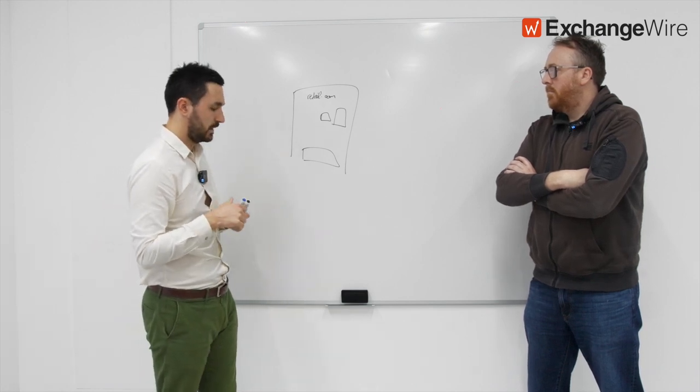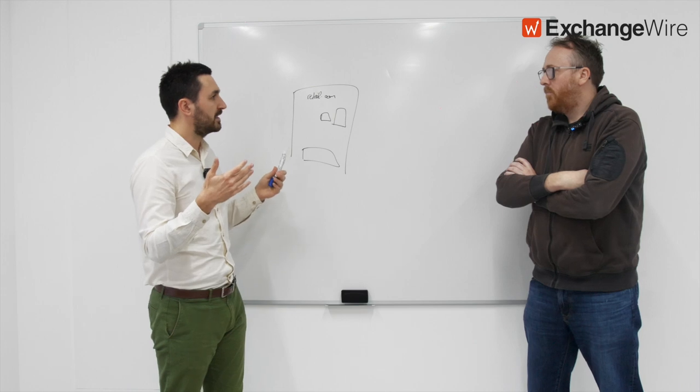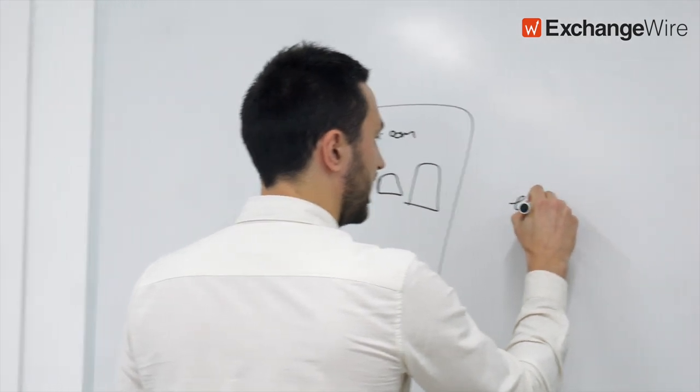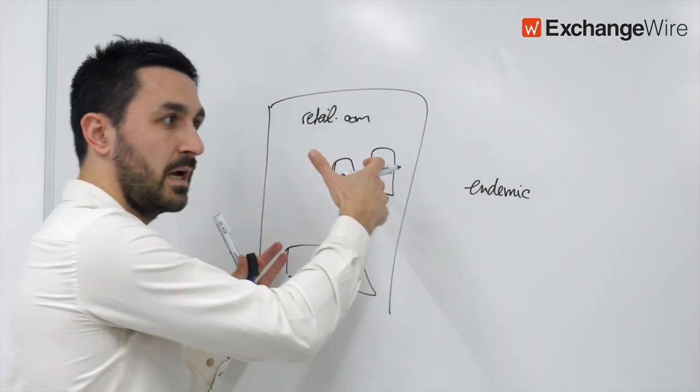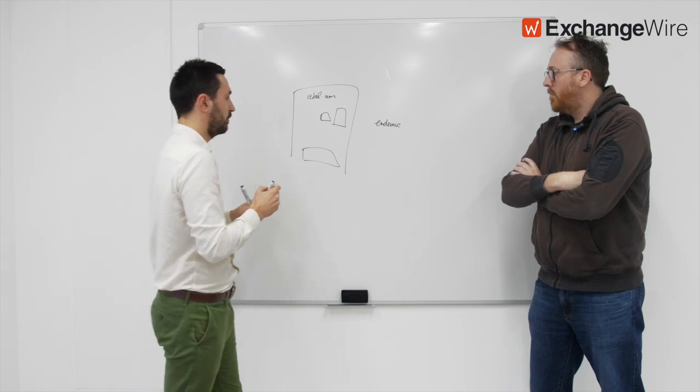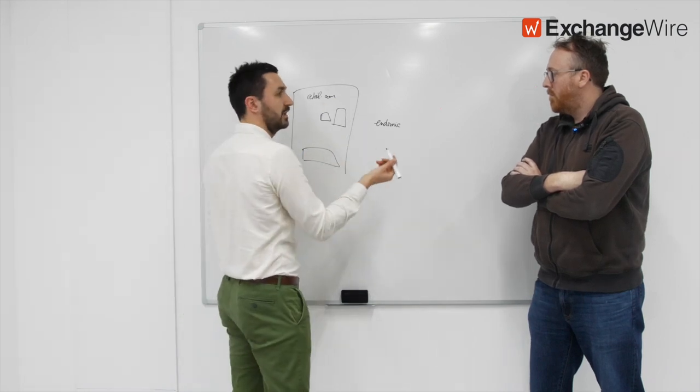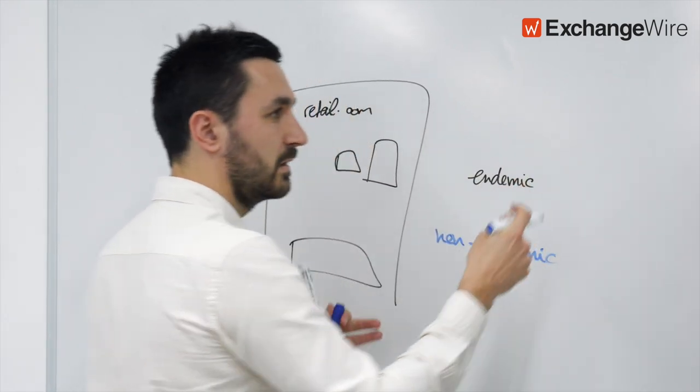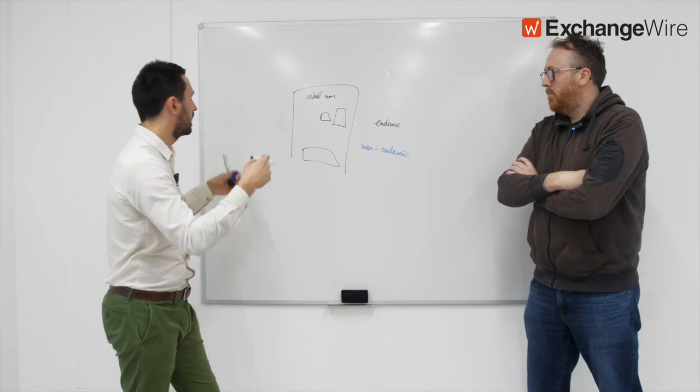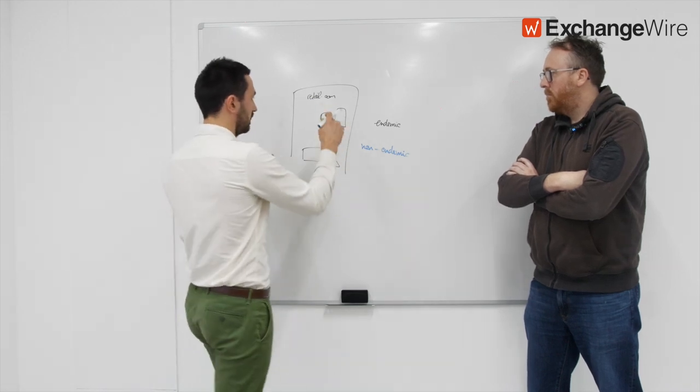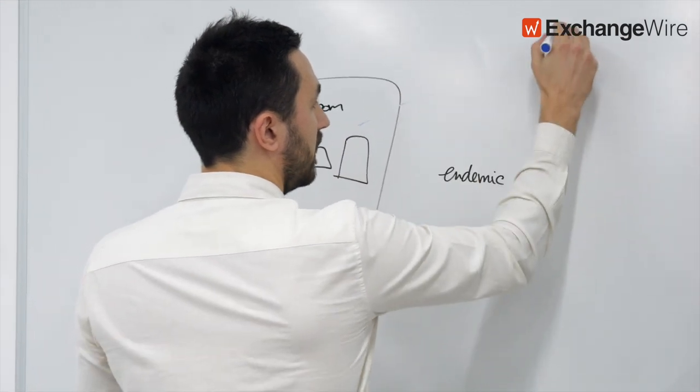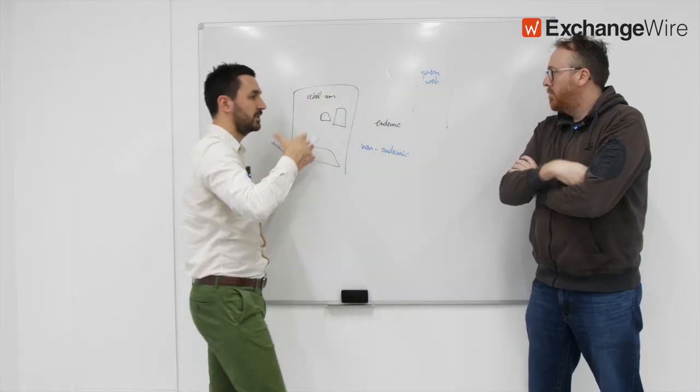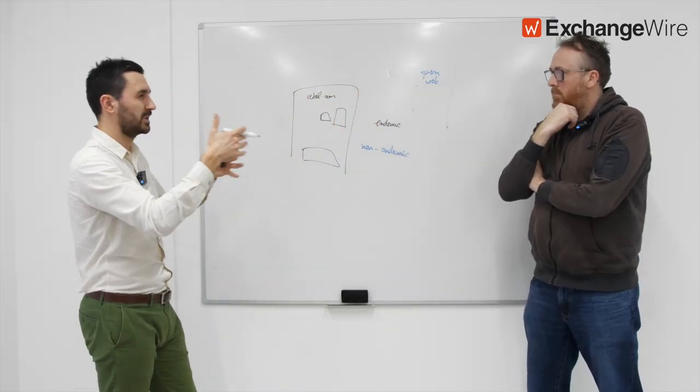So when you think about the retailer expanding the relationship that they might have with these brands, maybe it's not only going to be endemic demand, people that actually sell products on the website. Maybe it's going to be opening this same inventory to non-endemic. So now maybe I want to bring in a bank, insurance company, a car company. So that's a new way. You could also imagine using data from this retail website and actually use that for open web. How do I expand the relationship I can have with this brand using my data and not just my inventory?